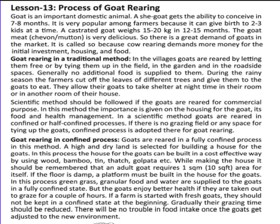In the scientific method, importance is given to the housing for the goat, its feed, health, and management. In the scientific method, goats are reared up in a confined or half-confined process. If there is no grazing field or space available, a confined process is used for goat rearing. Goats are reared up in a full confined process in this method. High and dry land is selected for building a house for the goat. The house can be built in a cost-effective way by using wood, bamboo, teal, corrugated iron, and gulpata, etc. When making the house, it should be remembered that an adult goat requires 1 sqm to 10 sq ft area for the estate.